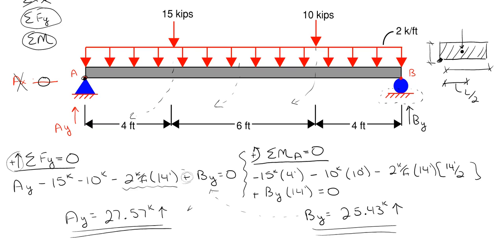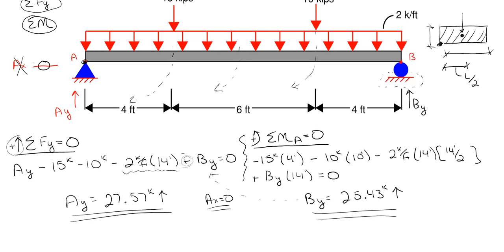So the reactions are: A sub x equals zero, A sub y equals 27.57 kips, and B sub y equals 25.43 kips. There is one check you can do before finishing to make sure you have it 100% correct: sum moments at the other reaction point. It should equal zero, or very close to zero due to rounding.